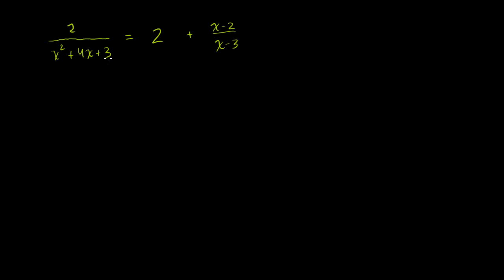What two numbers when you multiply them equal 3 and you add them equal 4? Well, 3 and 1. So x squared plus 4x plus 3 factors as x plus 3 times x plus 1. So what can we multiply both sides of this equation by to get rid of x plus 3 and x plus 1 here, and x plus 3 over there? We multiply everything by x plus 3 and then by x plus 1. The least common multiple of x plus 3 and x squared plus 4x plus 3 is actually x squared plus 4x plus 3, because this is a multiple of that.